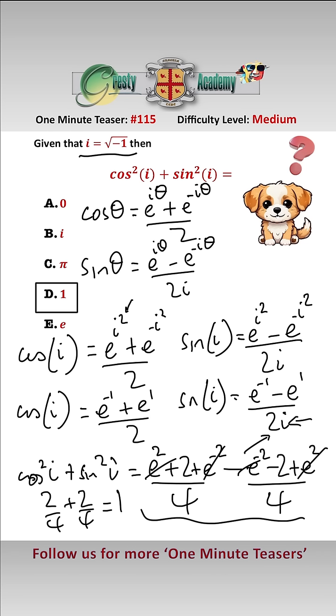Which is answer D, so for complex numbers, cos squared plus sin squared is equal to 1, exactly the same as for reals.